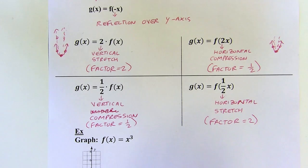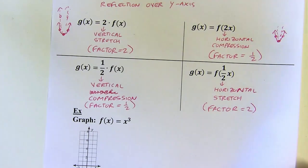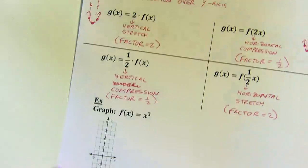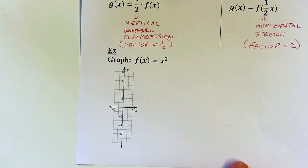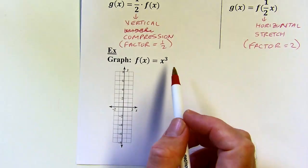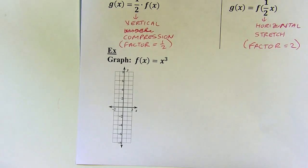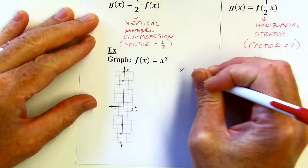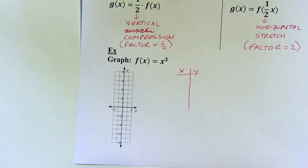A little confusing, but that's how it works. So we'll get to some of these transformations in just a minute, but we need some parent graphs first. We've never graphed y equals x to the third in here, so let's go ahead and do that. We can make an x-y table to start, since we haven't looked at these before.